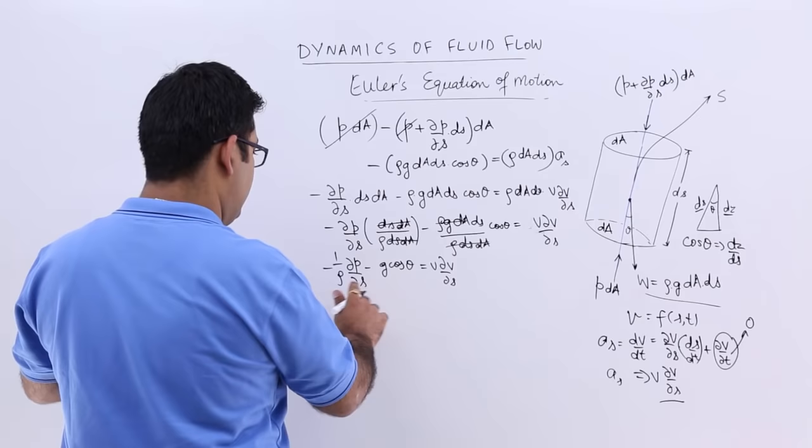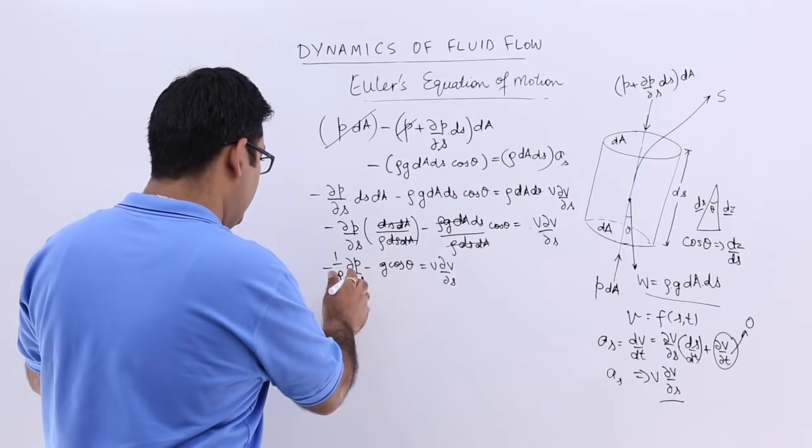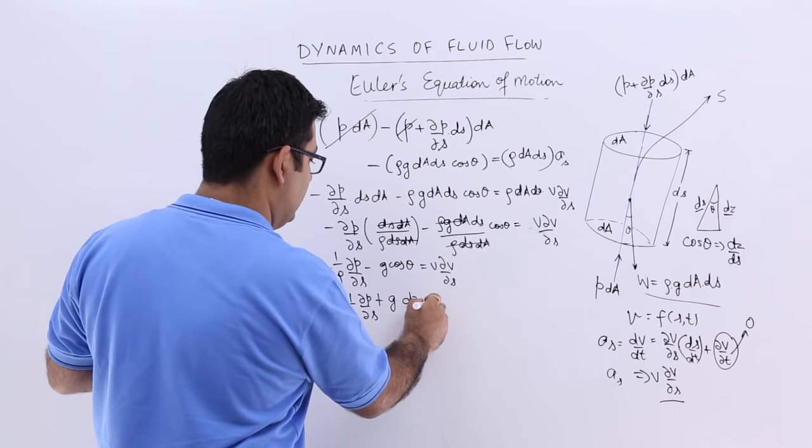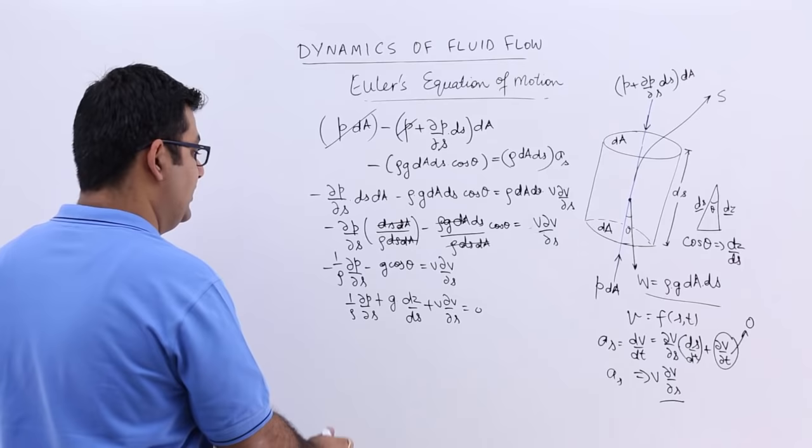So we will get, take the negative sign on to that side, bring that term over here, you will get all positive signs. So it will be 1 by rho, curly p upon curly s plus g into cos theta is dz upon ds plus V into curly V by curly s equal to 0.